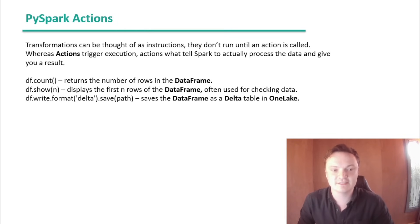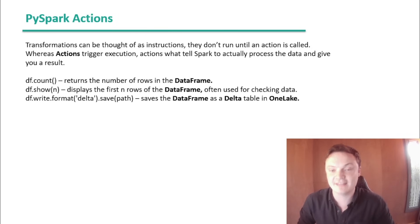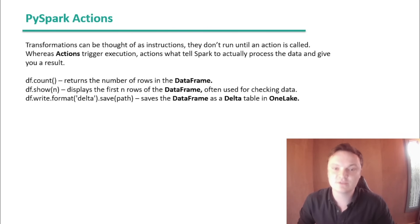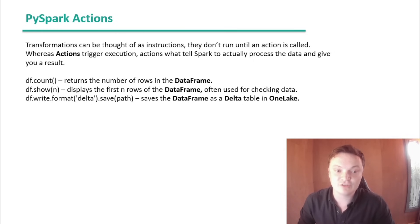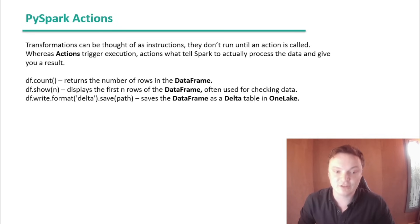PySpark actions: transformations can be thought of as instructions — they don't run until an action is called, whereas actions trigger execution and tell Spark to actually process the data and return a result. For example, df.count returns the number of rows, df.show displays the first number of rows and is often used for checking data, and df.write.format('delta').save saves the data frame as a delta table in the lake.